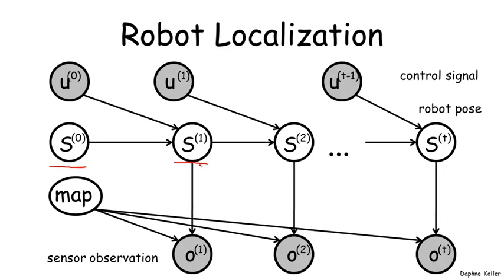We also have an external control signal U, which is the guidance that the robot is told of move left, move right, turn around. Since these variables are observed and externally imposed, they're not really stochastic random variables, they're just inputs to the system.